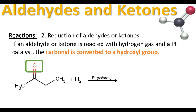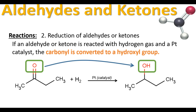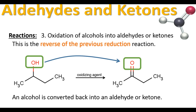Our second reaction is reduction, which can happen with both aldehydes and ketones. You react the aldehyde or ketone with hydrogen gas in the presence of a catalyst — platinum works well. The reaction is simple: you turn the carbonyl into a hydroxyl group, an alcohol. The H₂ splits apart — one hydrogen attaches to the oxygen, breaking the double bond to a single bond, and the second hydrogen attaches to the carbonyl carbon. All you have to do is turn the aldehyde or ketone into an alcohol.